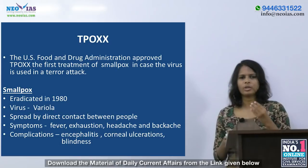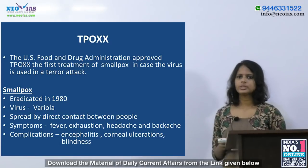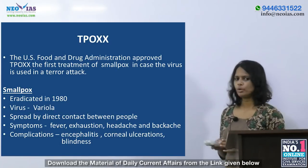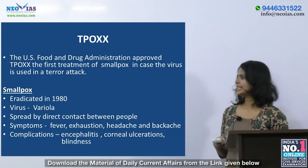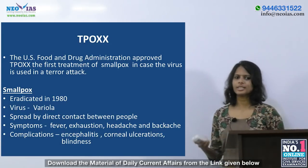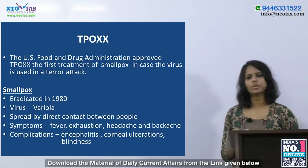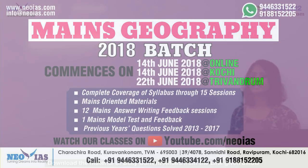Complications of smallpox include encephalitis — inflammation of the brain — and corneal ulceration, which is an open sore on the eye that can cause blindness. TPOX is a capsule taken twice daily for 14 days. Its effectiveness was tested on monkeys and rabbits, and it proved highly effective with more than 90% of these animals surviving.